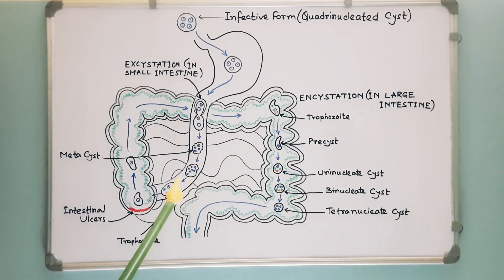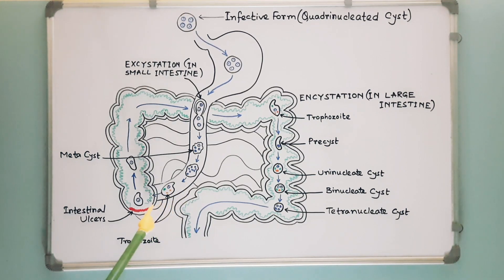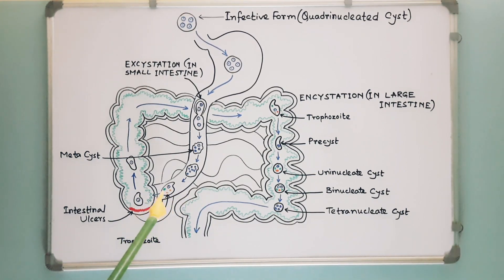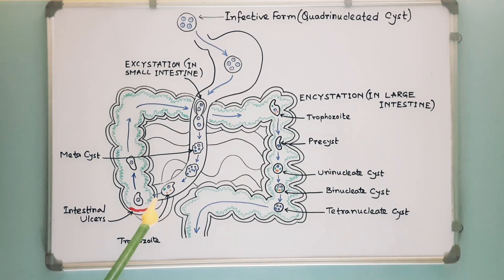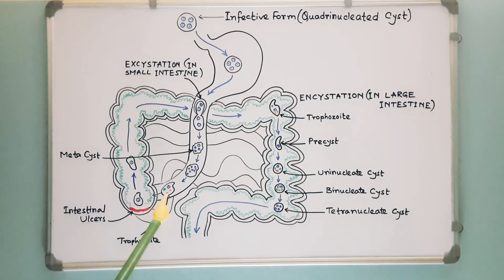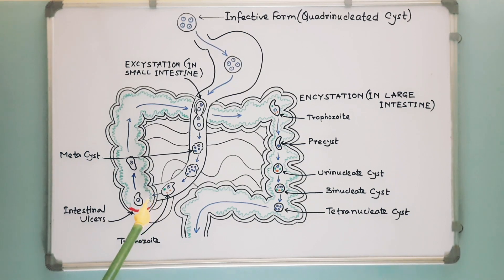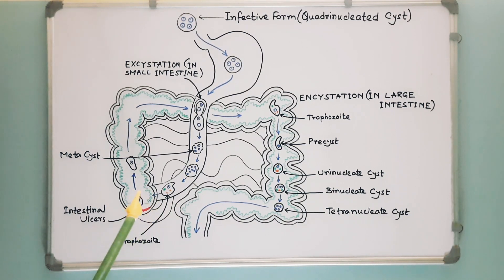Metacystic trophozoites are then carried by peristalsis to the ileocecal region of the large intestine. Here they multiply by binary fission and colonize on the mucosal surfaces and crypts of the large intestine.